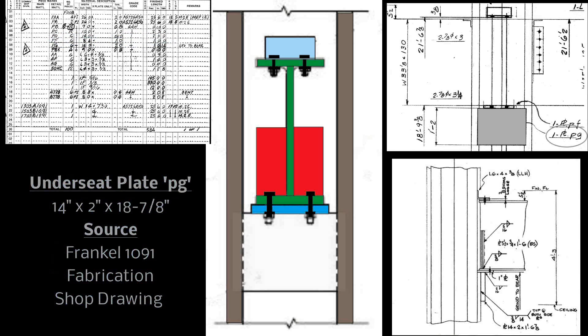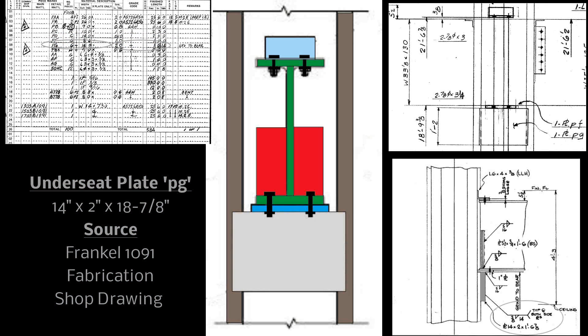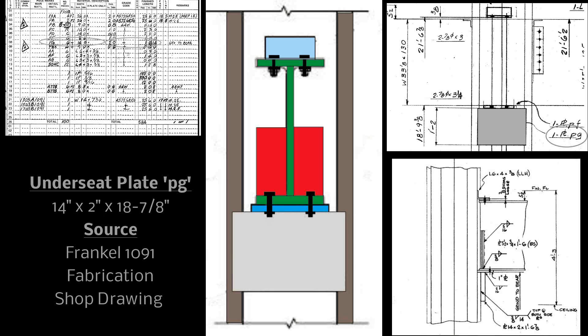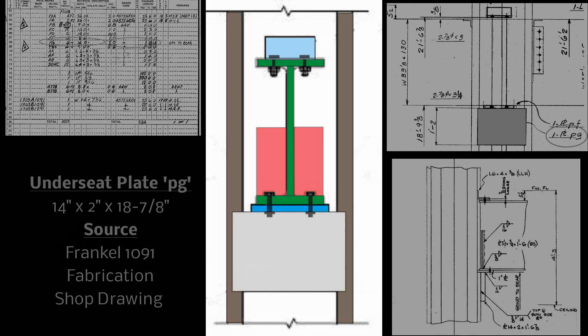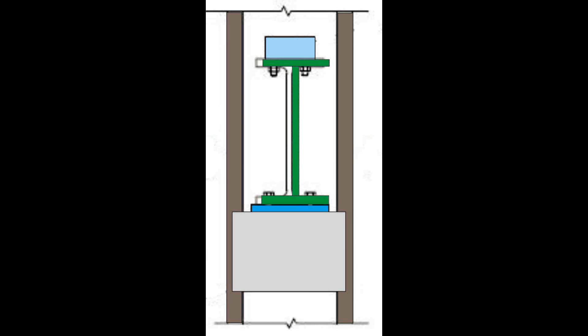Directly below this plate there is another plate called out as PG. It is 14 by 2 by 18 and 7/8ths inches. It is referenced on the same drawing. Now, let's see how these elements would work together in terms of NIST collapse hypothesis. In particular, we're going to look at the difference that the inclusion of the stiffener plates would have made to NIST hypothesis.